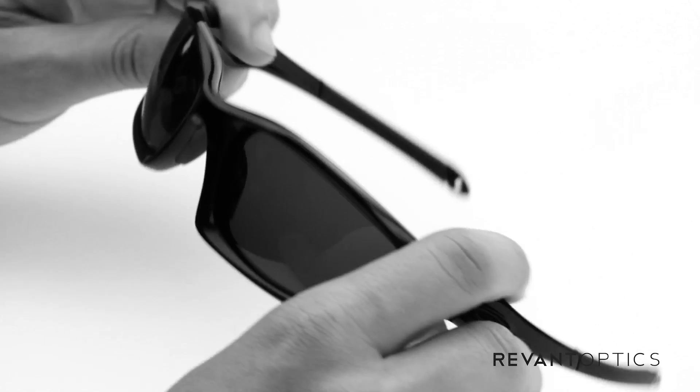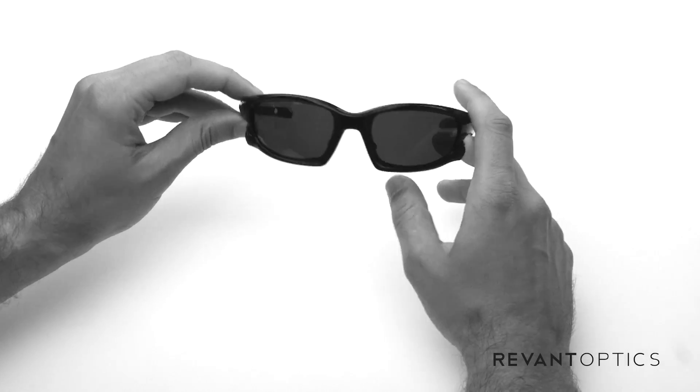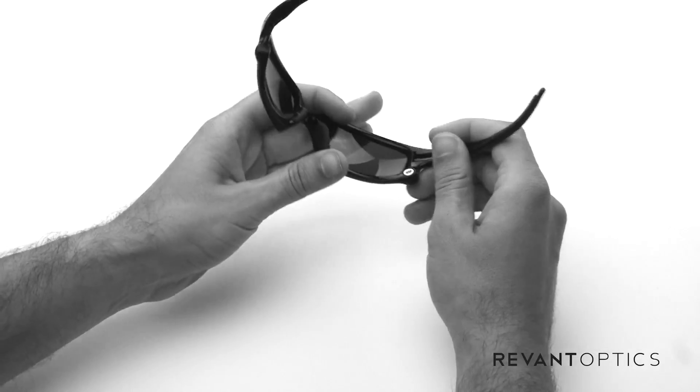This frame right here has some Stealth Black polarized Revant lenses in them. It's pretty easy to remove them.